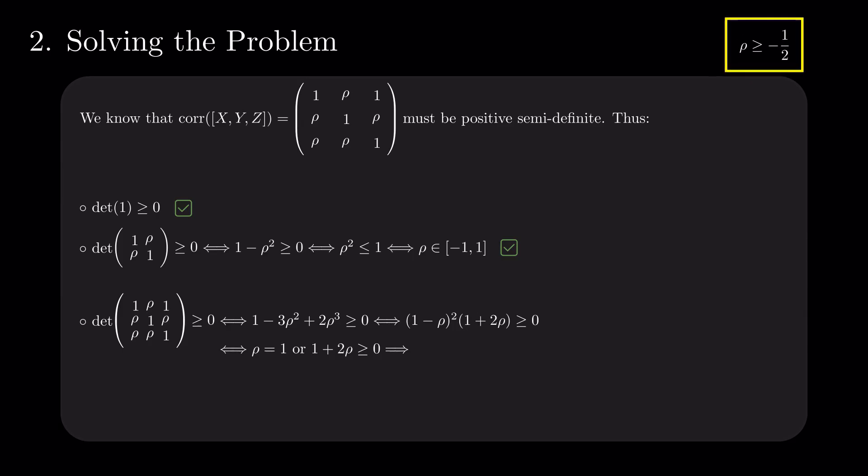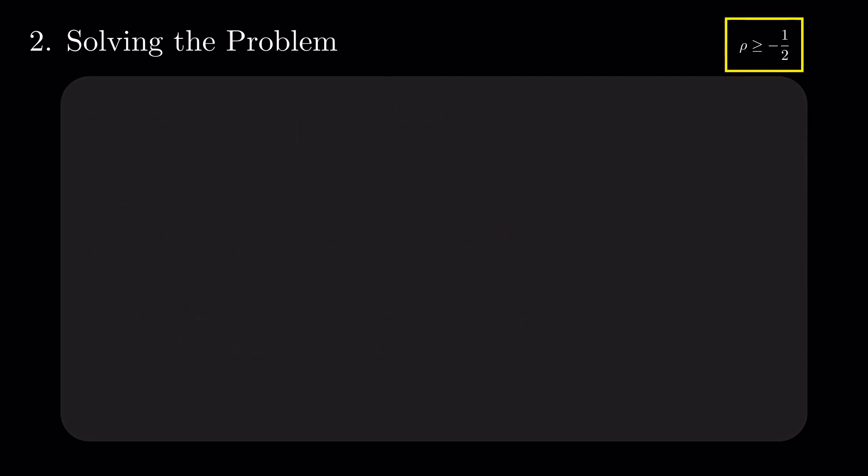Now, we have reduced the interval for rho, and the minimal value that it can take is at least minus 1 divided by 2. If we find a triplet of random variables with pairwise correlations of minus 0.5, we have proved that this value is attainable, hence the minimum. Unfortunately, this is the tricky part. One way to construct such variables is